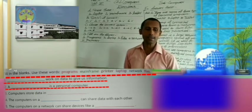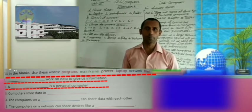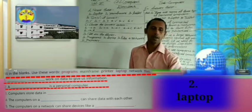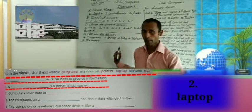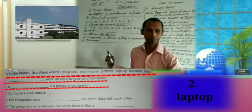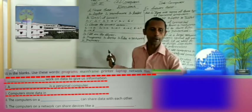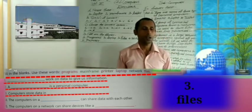Now, second: a blank is a personal computer. Yes, you are right — laptop is a personal computer. So write here: laptop. Now, third: computers store data in blank. Yes, you are right — files. So write here: files.